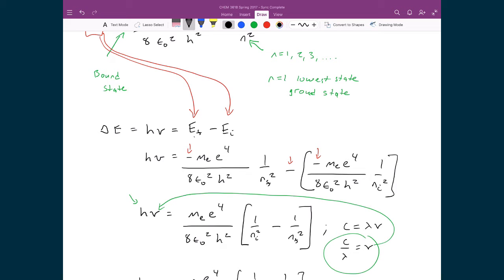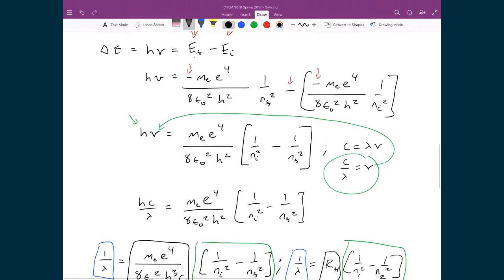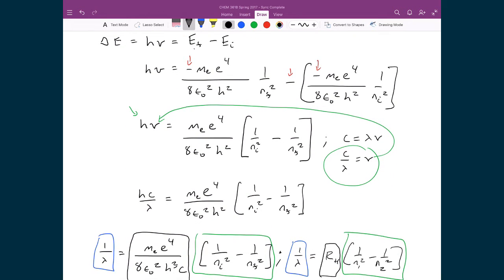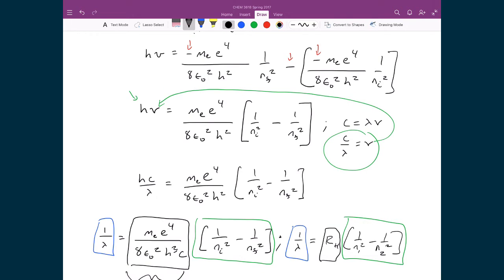And so a change in energy is just the final minus the initial energy, so we substituted in that total energy term that we just calculated. We did it twice, where one is just denoted as the final and the other one is denoted as the initial. We then distributed it out many terms, so we're left with two terms where one of them is the 1 over n² term minus the other 1 over n² term, and then we had all the constants out front.